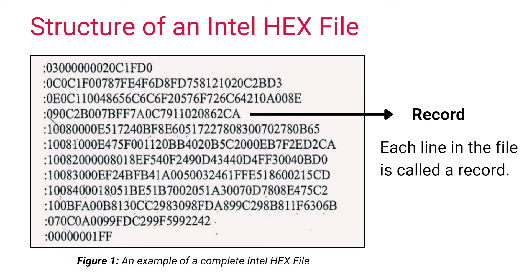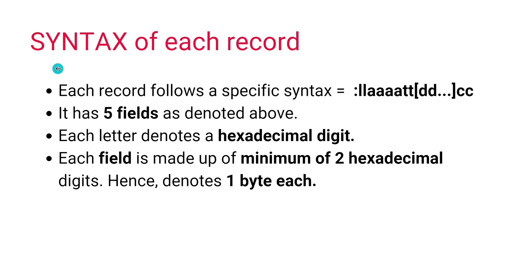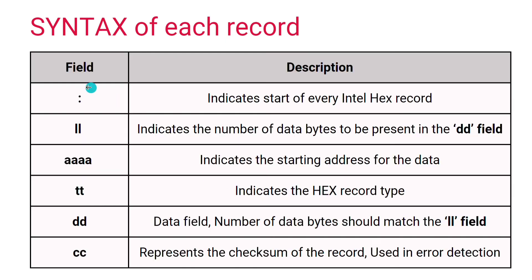Coming to the syntax of each record: the Intel hex file record has five different fields. Each field is represented by a maximum of two letters, and each letter stands for a hexadecimal digit. In short, each field is made up of a minimum of two hexadecimal digits, so each field represents one byte.